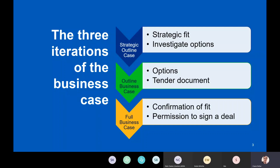The full business case is actually the one that should have the least amount of work, because it's about confirming that a supplier can meet the needs of your chosen option. It's confirmation that the option still fits the strategic need — which can change during the time it takes to produce a business case — and it's permission to go ahead and sign the deal and spend the money, whether or not you've gone to procurement.